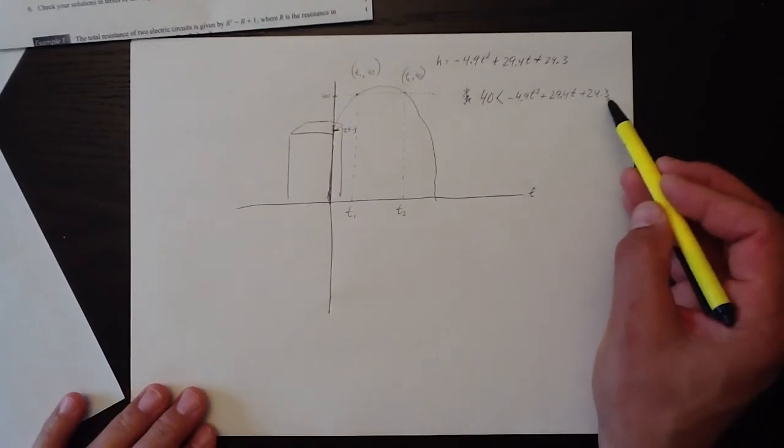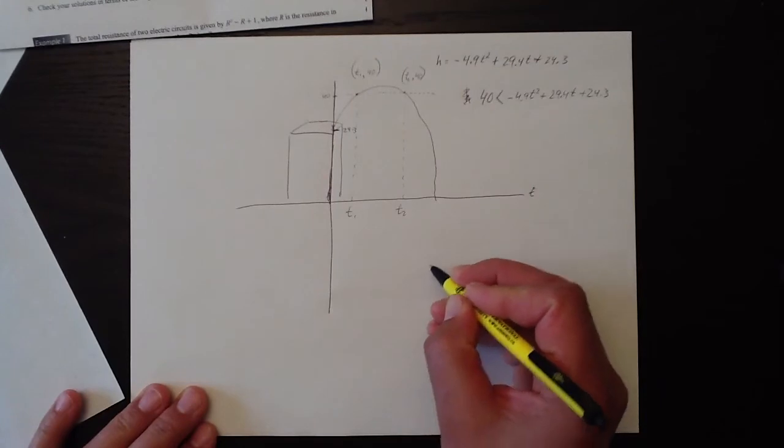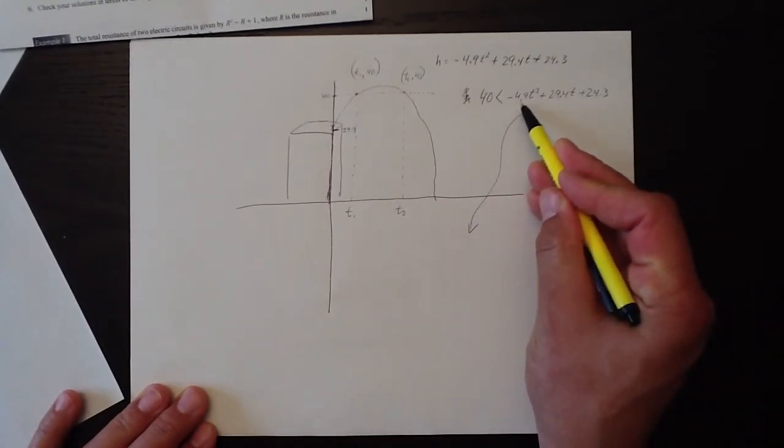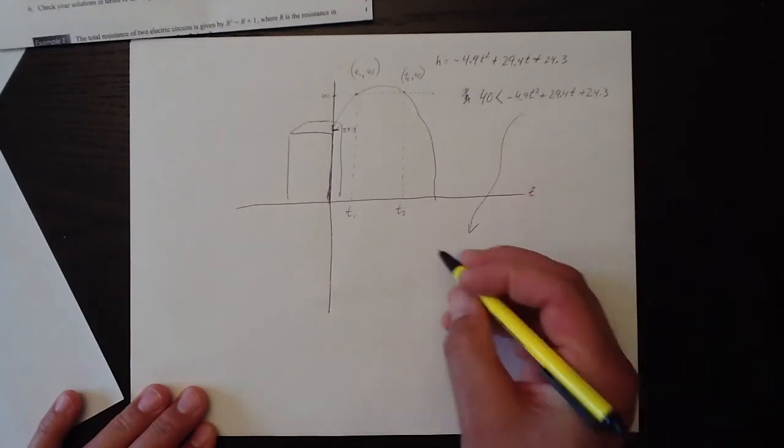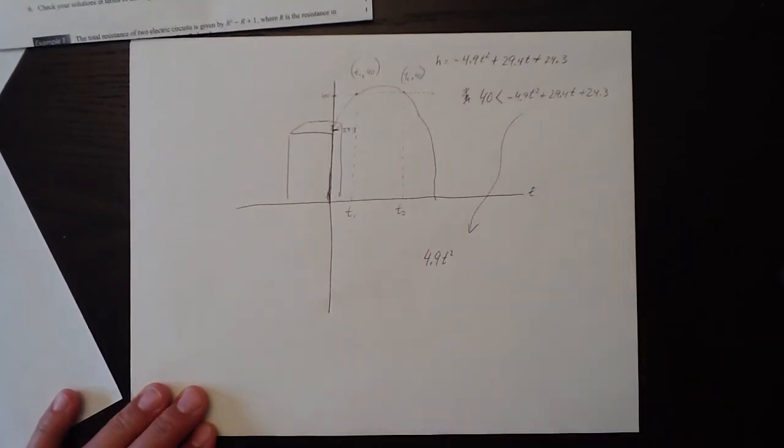So using the quadratic formula, I'm going to push everything over to the left hand side. So we're going to get, I'm going to write it down here where I've got some space. We're going to add negative 4.9 t squared. So 4.9 t squared is going to be over there.